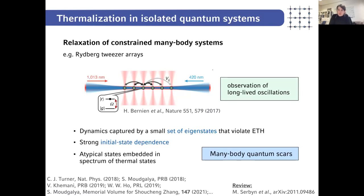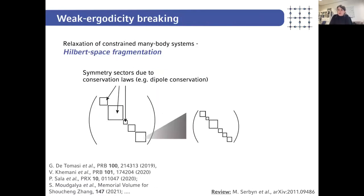This highlights a strong initial state dependence of the phenomenon, because depending on the energy density, if you prepare a different initial state and it does not belong to this atypical subset, it can show completely different relaxation behavior. These long-lived oscillations have later been dubbed many-body quantum scars, in part due to their analogy to classical scarring behavior.